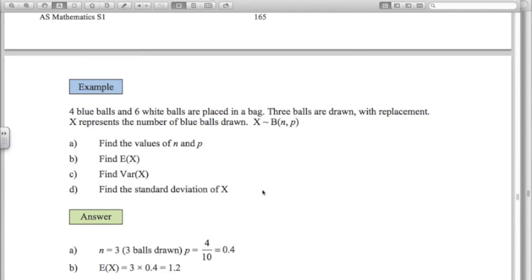So the values of n and p: n equals three and p is four tenths. There are four blue balls out of ten total, so 0.4.